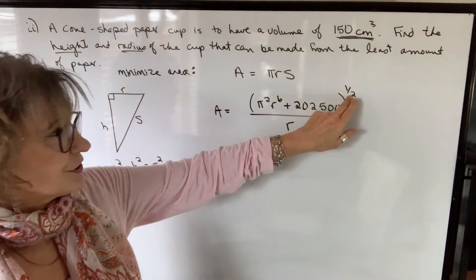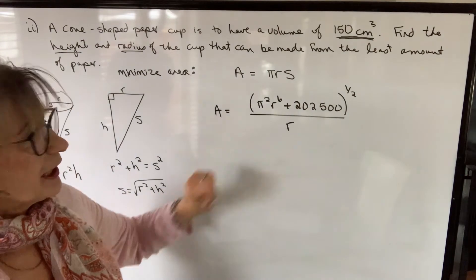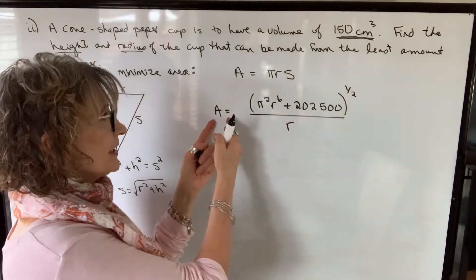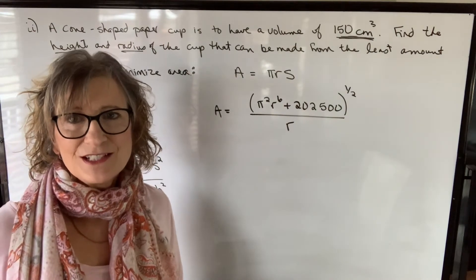Square root, which I'm going to change to power one half of this expression divided by r. Now areas in terms of one variable. I can differentiate, set it equal to zero and solve,